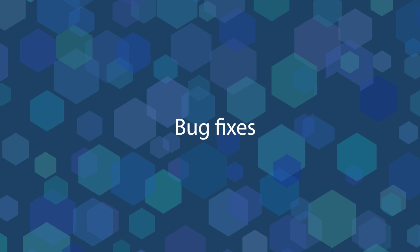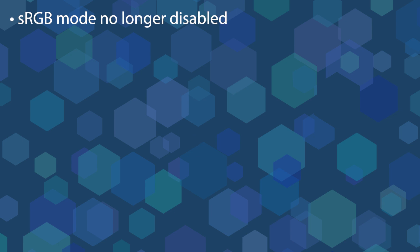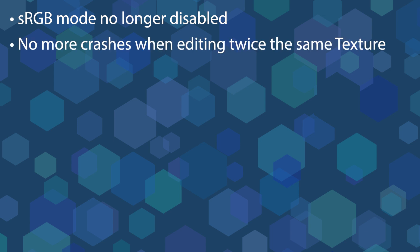A few annoying bugs have been fixed. For instance, the author RGB mode is no longer disabled after editing a Texture 2D from the viewport drawing editor. In Illya 0.6, when you would edit twice the same Texture 2D through the viewport drawing editor, at the second attempt the texture would not contain any layer and sometimes it would even crash. This has been fixed in Illya 0.7.